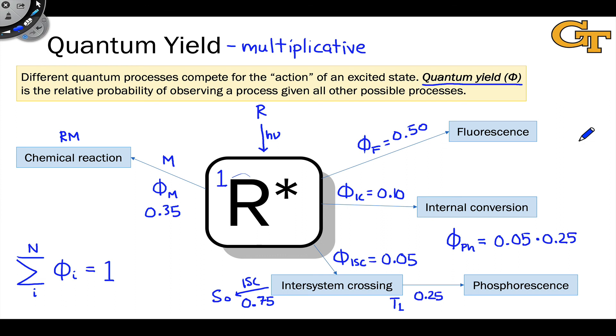So highly useful concept for rates and probabilities, quantum yield. It's a little bit tricky to measure. When we talk about experimental methods and photochemistry, we'll dig into approaches to measuring quantum yield in the future.